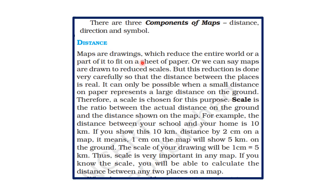Maps are drawings which reduce the entire world or a part of it to fit on a sheet of paper. The size of the earth is very large while the sheet of paper is very small, so that large size must be shown on a small sheet. These difficulties are removed by using scales. Scale is the ratio between the actual distance on the ground and the distance shown on the map.